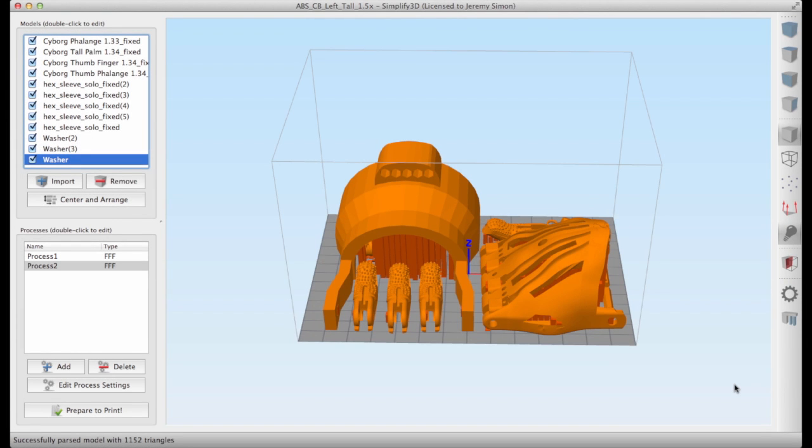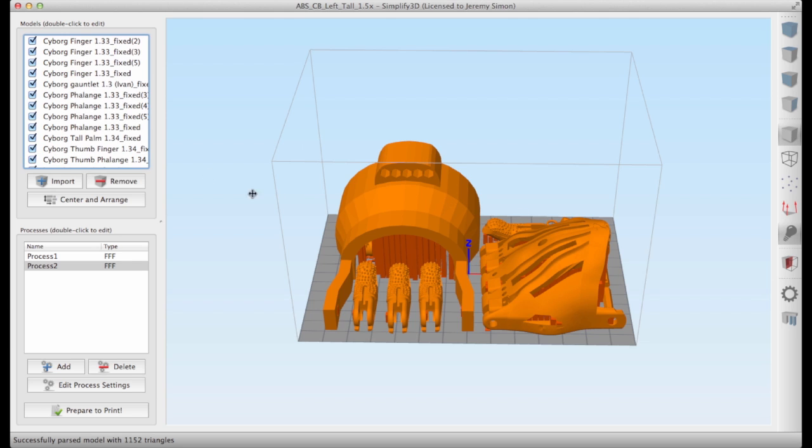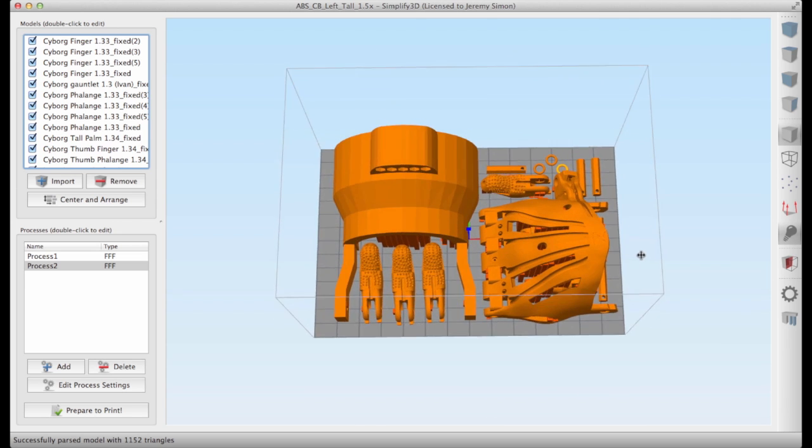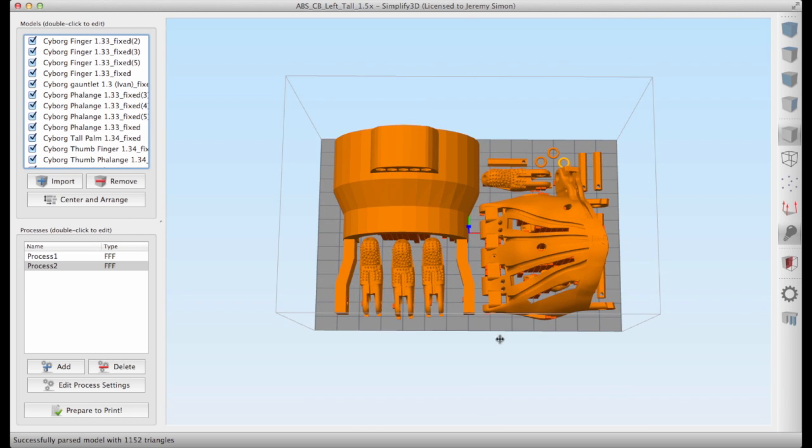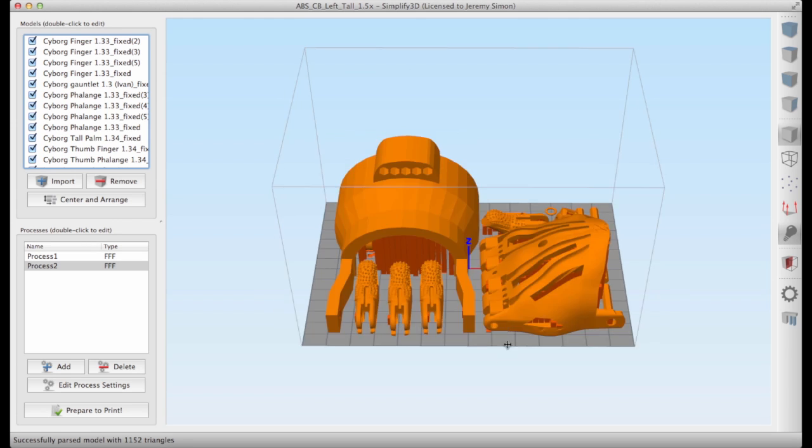So here we are in Simplify 3D, and this is the build plate that we set up for this experiment. As you can see, we have all of the various pieces. They are all laid out, but you can't see all the fingers, and that's because some of them are actually laid out underneath the palm and underneath the gauntlet.